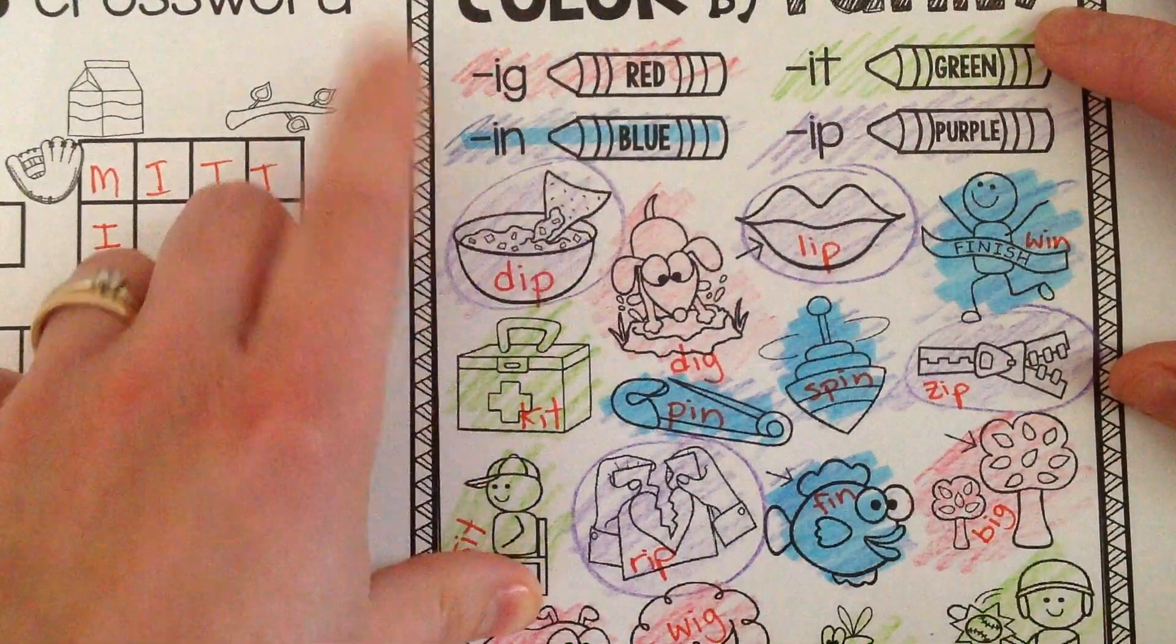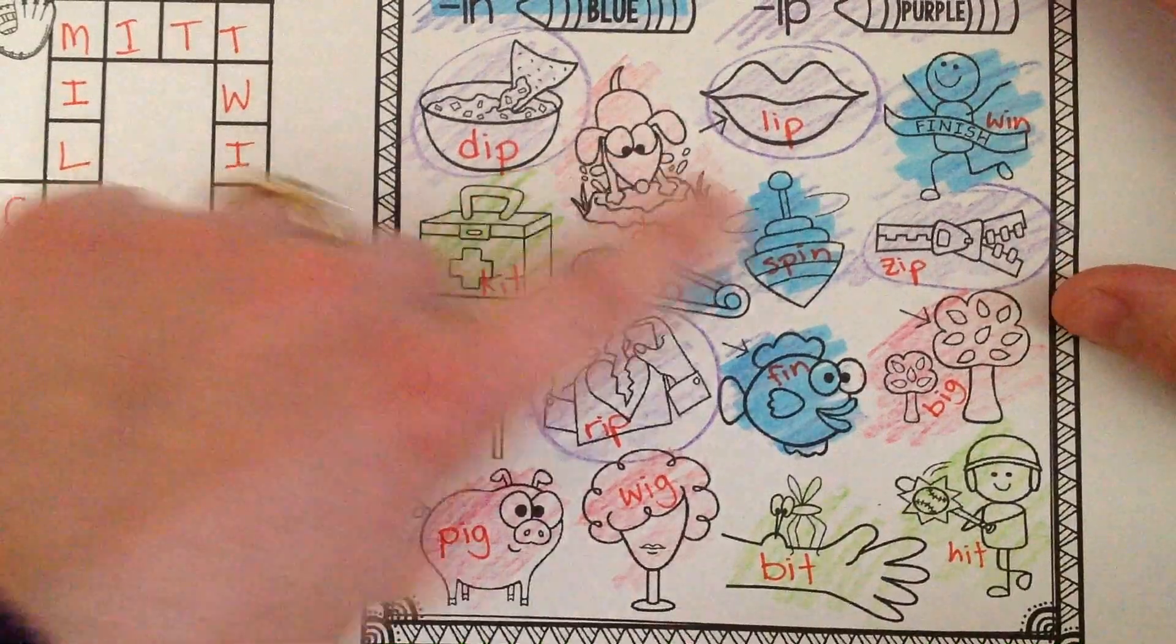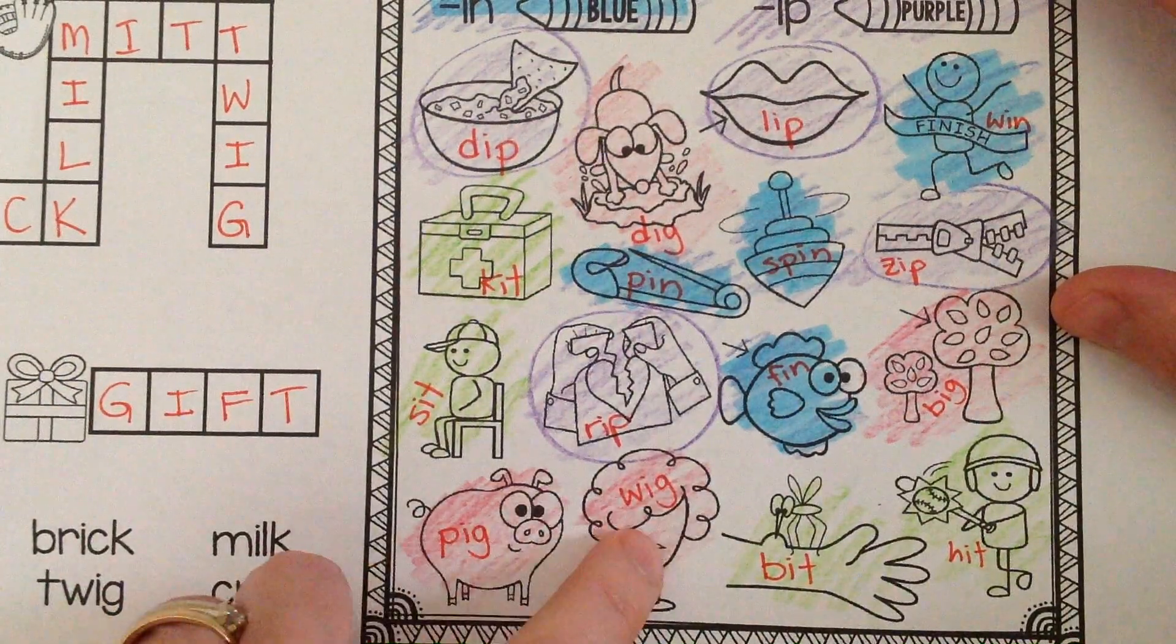So ig is red. We have dig, big, pig, wig.